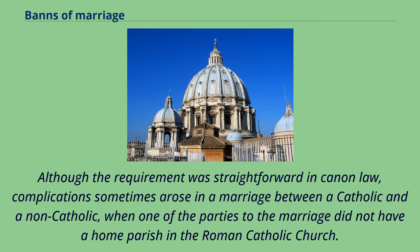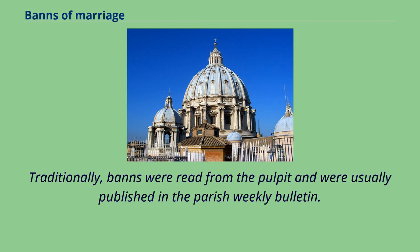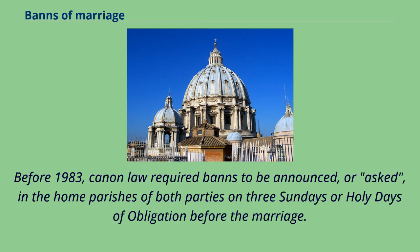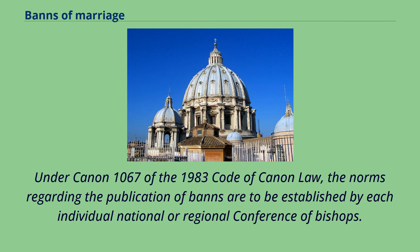Although the requirement was straightforward in canon law, complications sometimes arose in a marriage between a Catholic and a non-Catholic, when one of the parties did not have a home parish in the Roman Catholic Church. Traditionally, banns were read from the pulpit and were usually published in the parish weekly bulletin. Before 1983, canon law required banns to be announced in the home parishes of both parties on three Sundays or holy days of obligation before the marriage. Under Canon 1067 of the 1983 Code of Canon Law, the norms regarding the publication of banns are to be established by each individual national or regional conference of bishops.